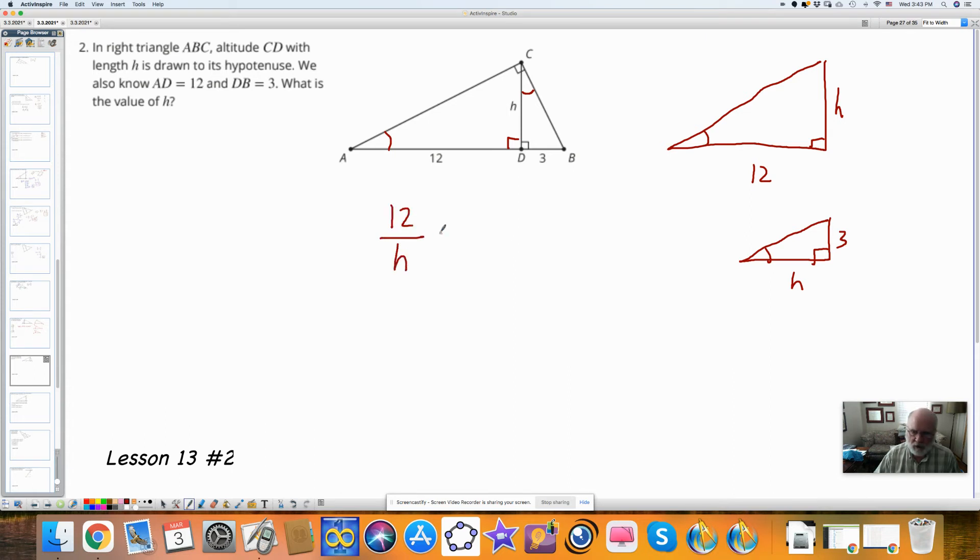What makes this a geometric mean is that when I have 12 is to H, H is to 3. These two values, the means, these are extremes, the means are the same. So I get H squared is equal to 3 times 12, which is 36. When I take the square root of both sides, I get a plus or minus 6. We'll ignore the negative root. H is 6.